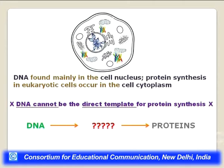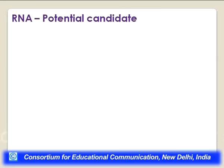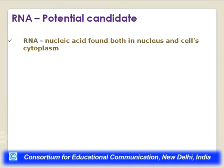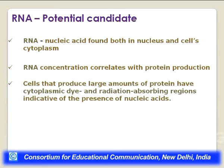From DNA to proteins, there must be some intermediate molecule. When scientists started looking for it, RNA was a potential candidate. RNA — ribonucleic acid — is another nucleic acid present in the cell. RNA is found both in the nucleus and the cytoplasm, and RNA concentration correlates with protein production: more protein, more RNA; less protein, less RNA.